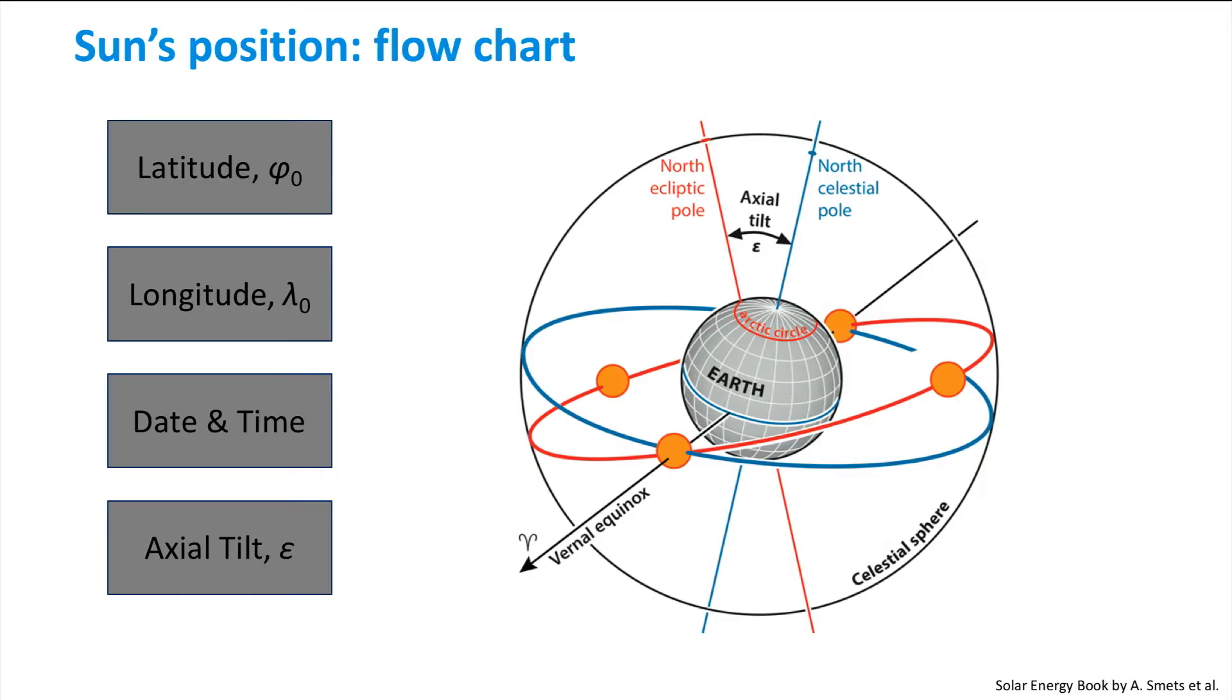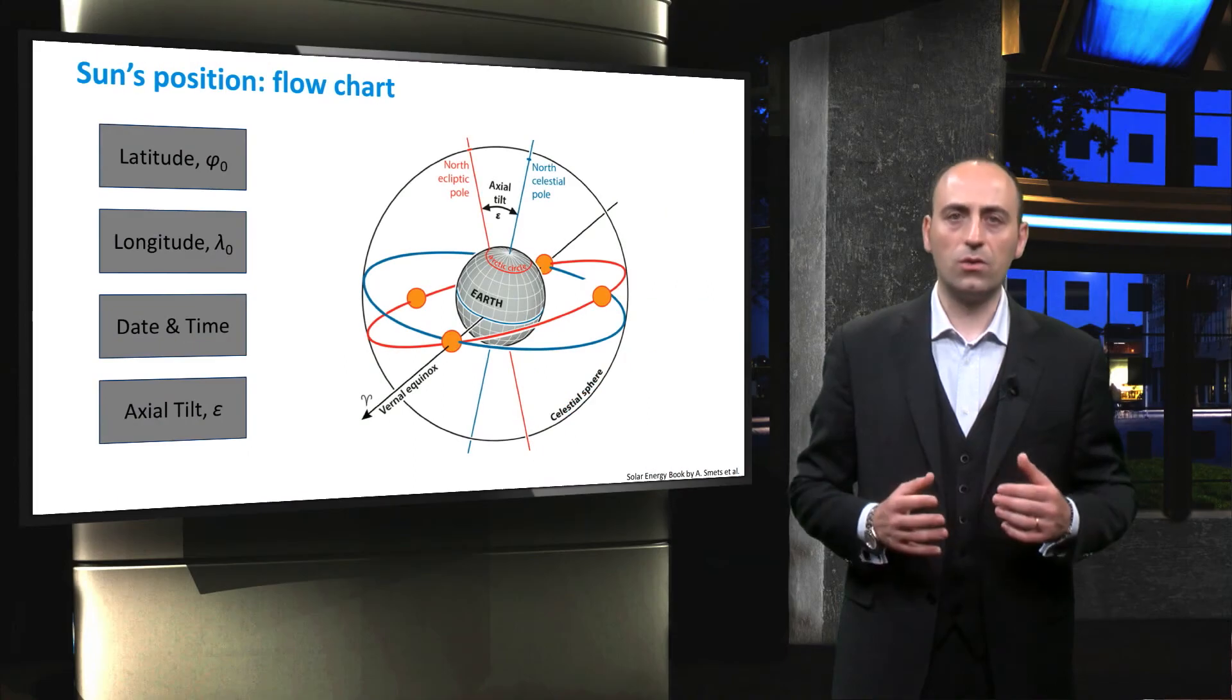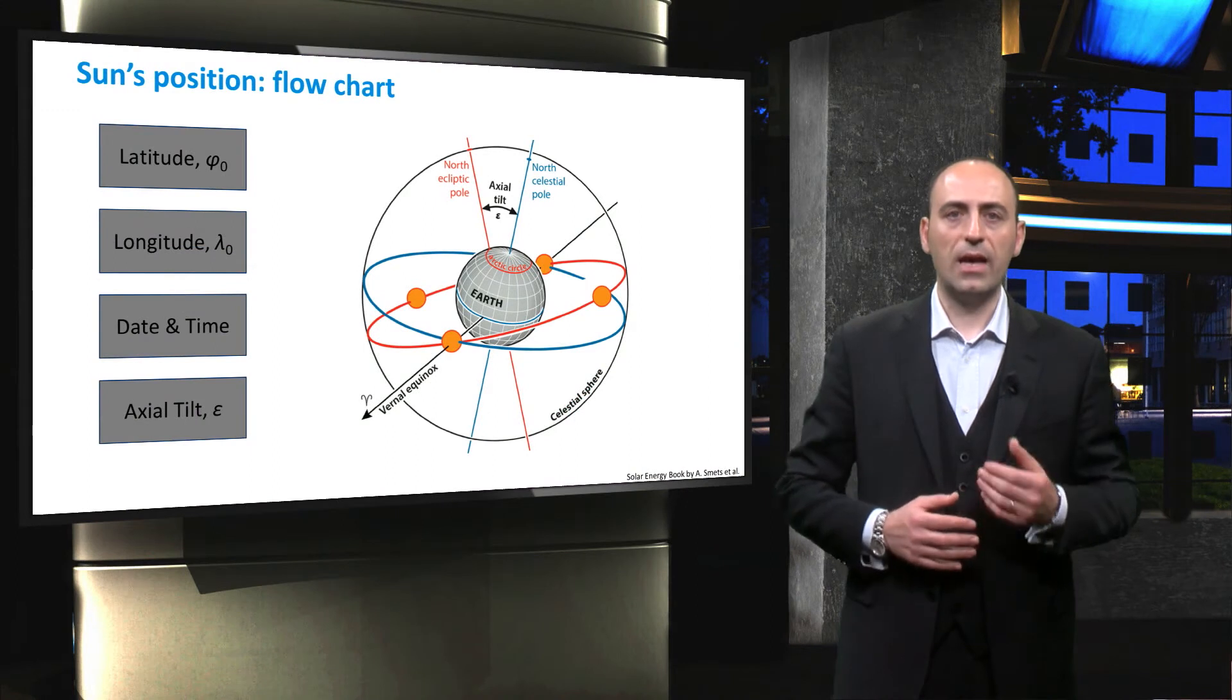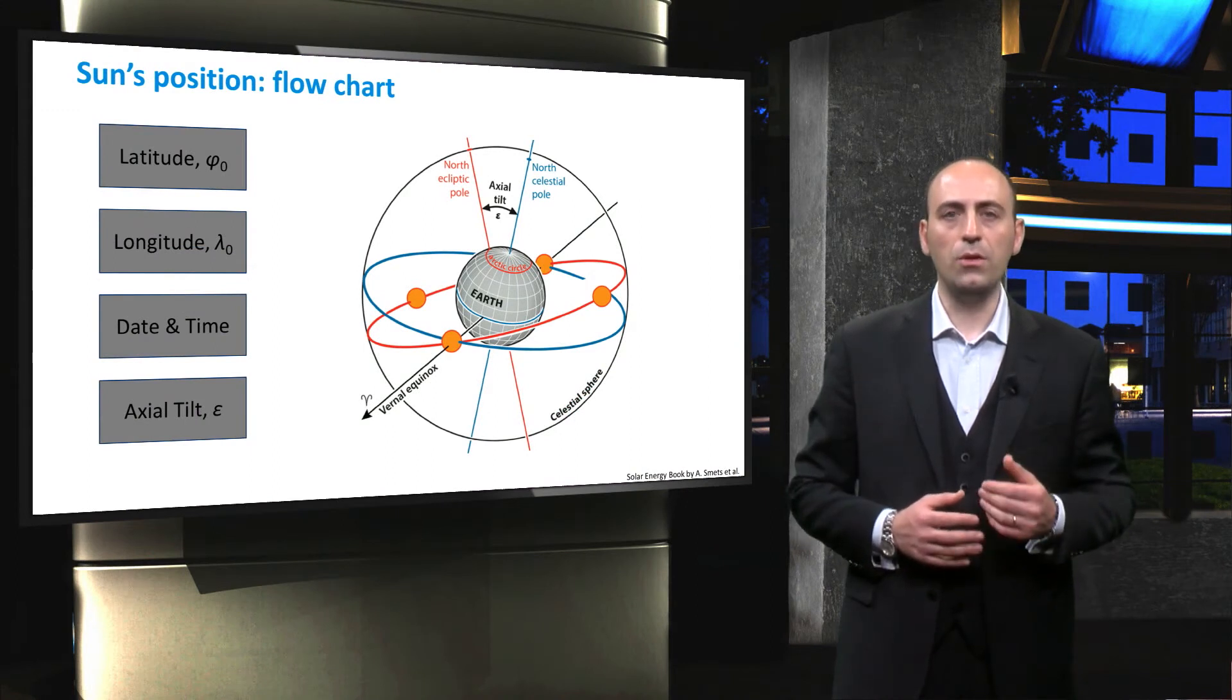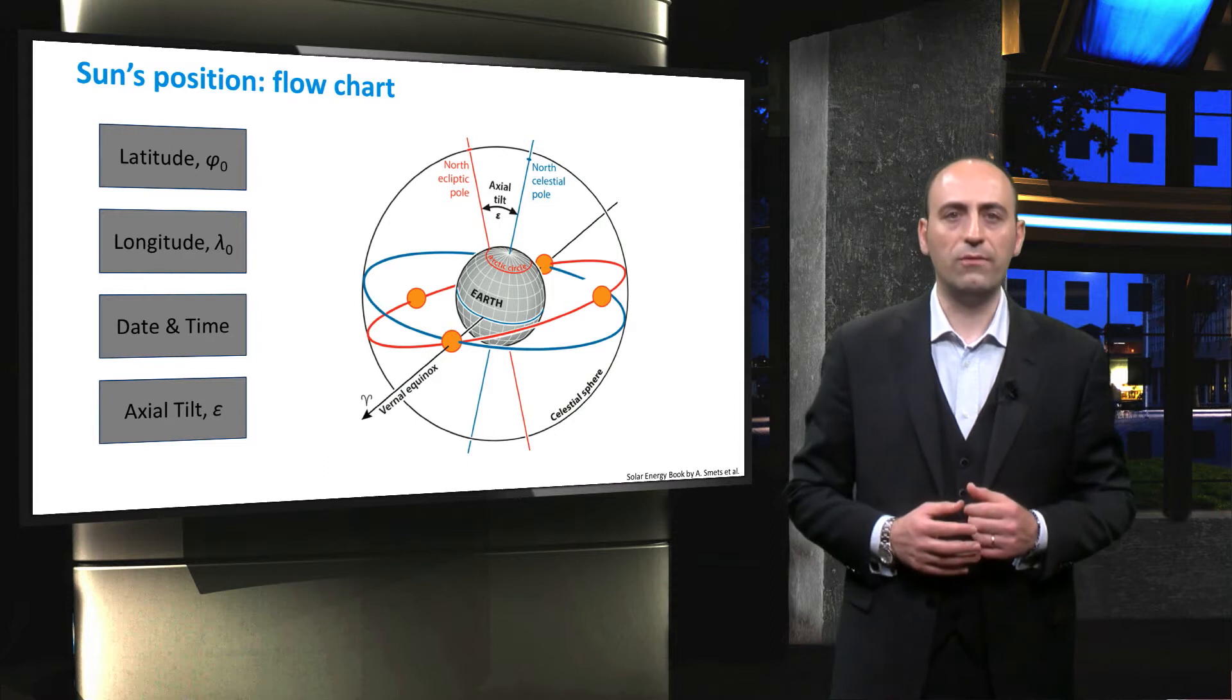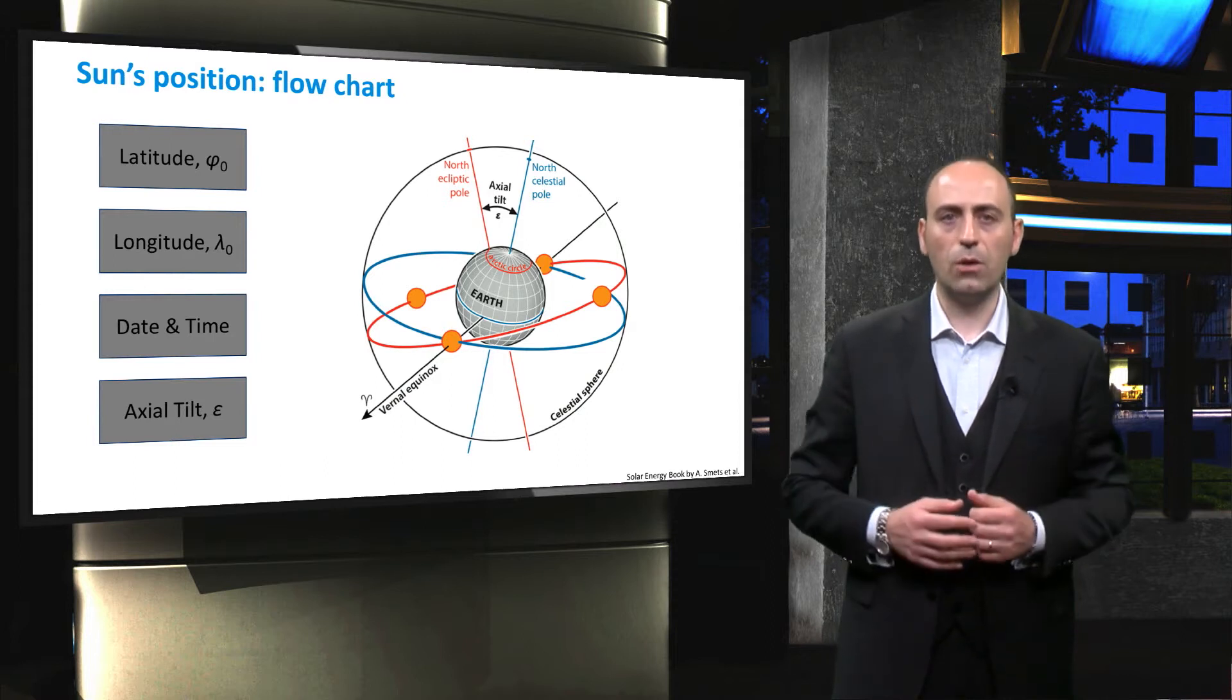Finally, the last input parameter that we need to know is the axial tilt, epsilon, which is the angle between the north ecliptic pole and the north celestial pole. This angle is not constant, as it has cyclic oscillations between 22.1 and 24.5 degrees, and it is a function of the date.